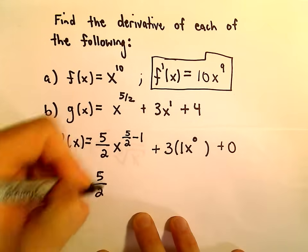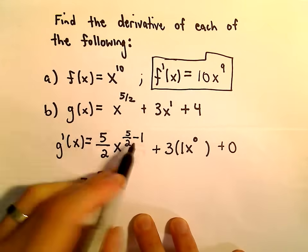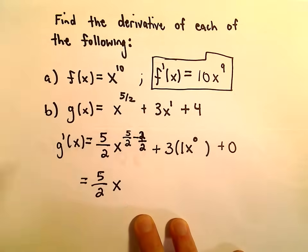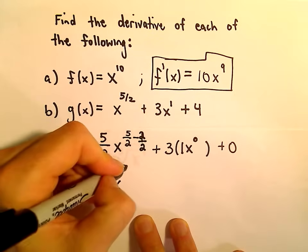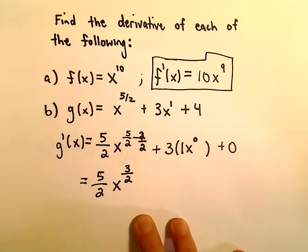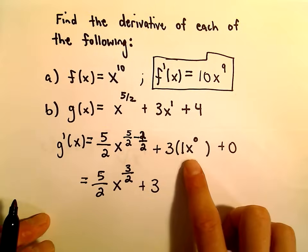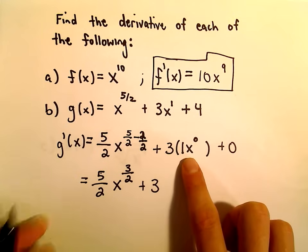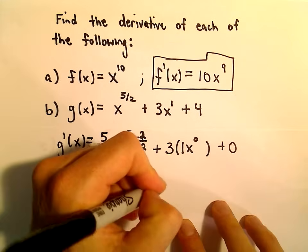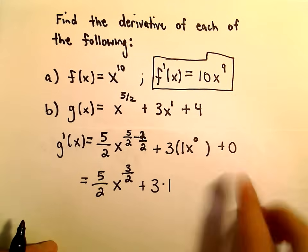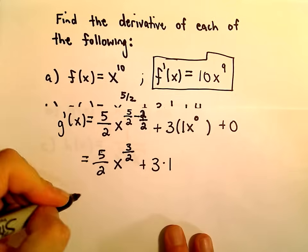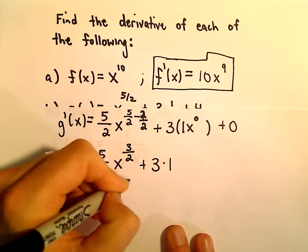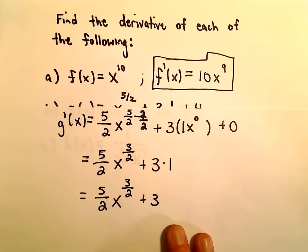All right, well, so we've got 5 over 2 times x to the 5 halves. Well, we would have to get common denominators, so instead of minus 1, we could write that as 2 over 2. Well, 5 minus 2 will give us 3 over 2. When we take a number and raise it to the 0 power, we're going to get just 1. So we can just write 3 times x to the 0 is 3 times 1. Again, the plus 0, we'll leave it off. So it says our derivative is going to be 5 halves times x raised to the 3 over 2 plus 3.